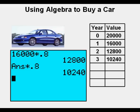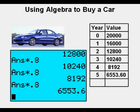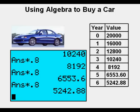For the third year value, we multiply $12,800 by .8 for a value of $10,240. For the fourth year price, we multiply $10,240 by .8 for a value of $8,192. For year five, we have $8,192 times .8 for a value of $6,553.60. And finally for year six, we have $6,553.60 times .8 for a value of $5,242.88.